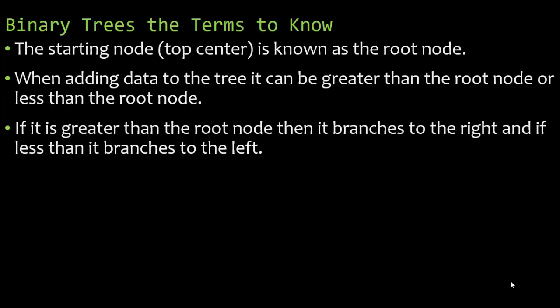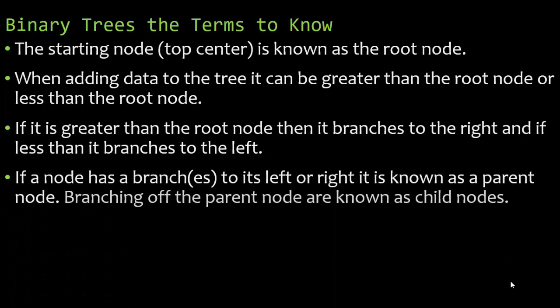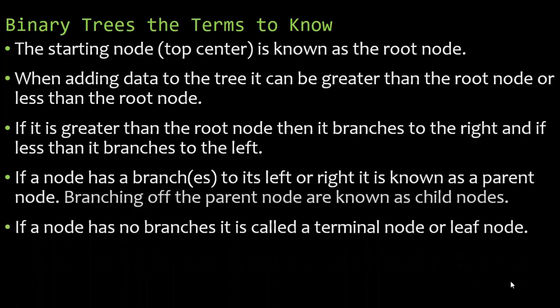Now, if a node has branches to its left or right, or just one branch, we call it a parent node. Branching off the parent node are what we call child nodes. If a single node does not have any branches — nothing to the left, nothing to the right — we call it a terminal node or leaf node. A node can have a maximum of two branches, one to the left and one to the right.